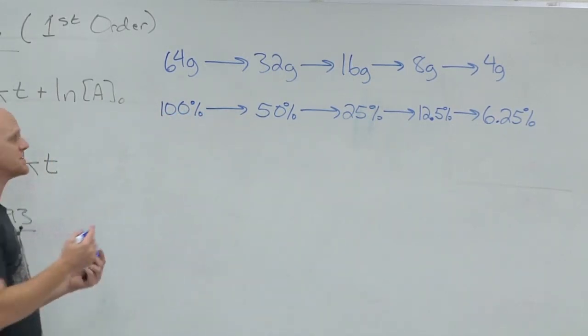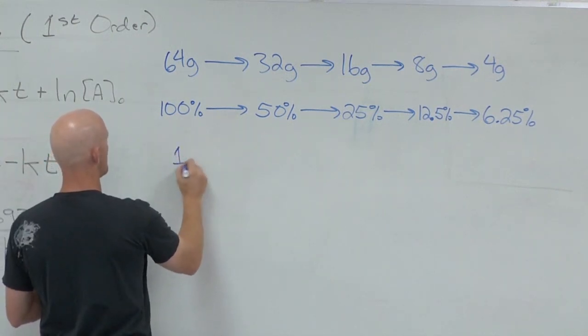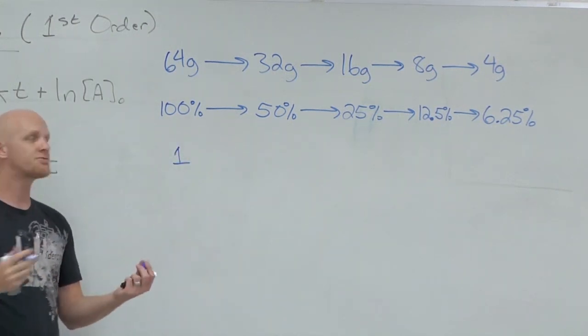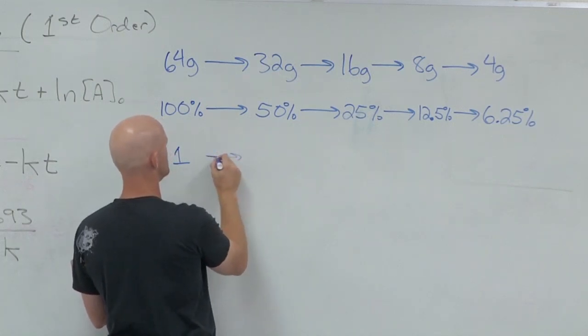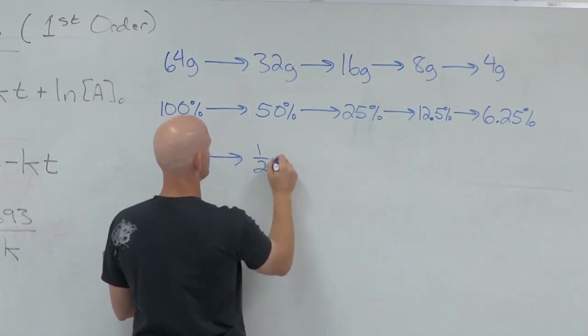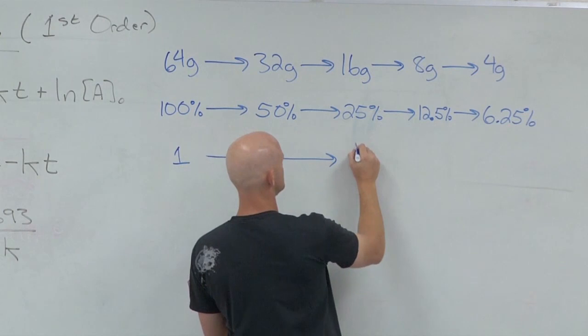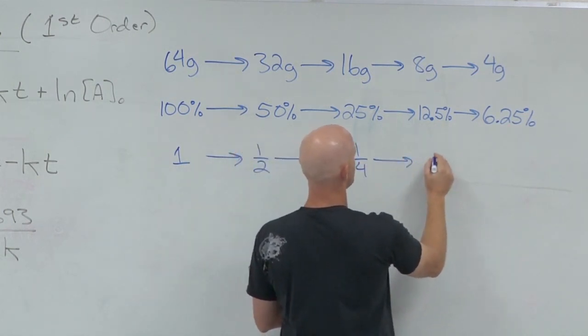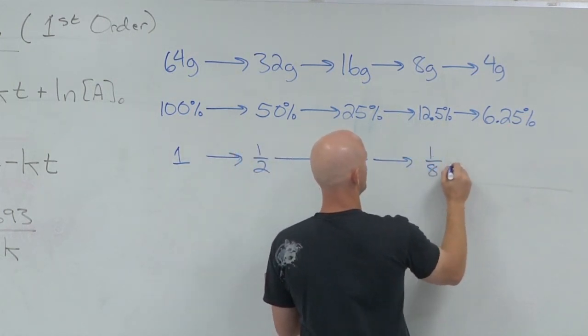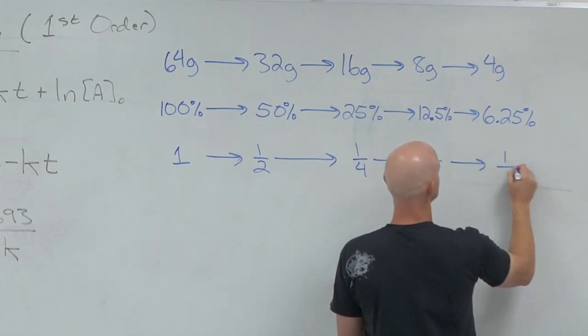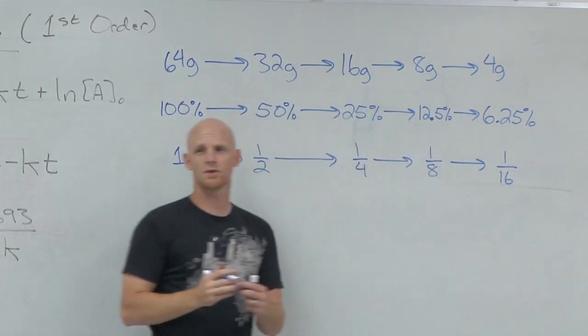You could also do this in fractions. Again initially you start with all of it, so one. What fraction would be left after one half-life? Half. After another half-life? 1/4. Another half-life? 1/8. Another half-life? 1/16. And so on and so forth.